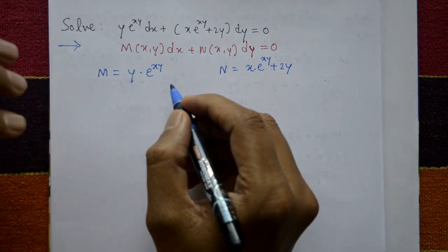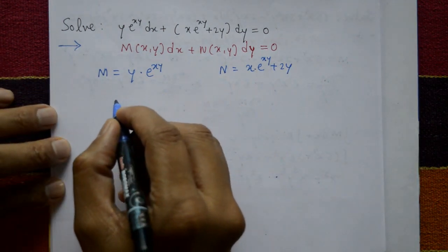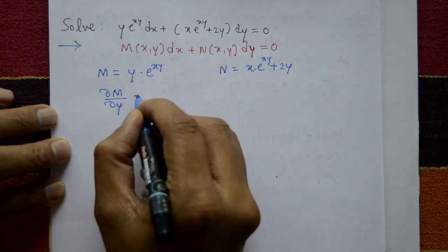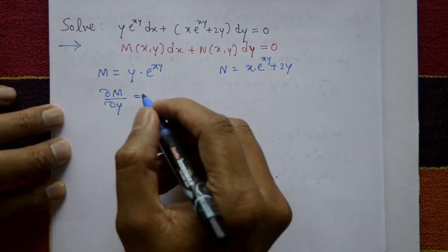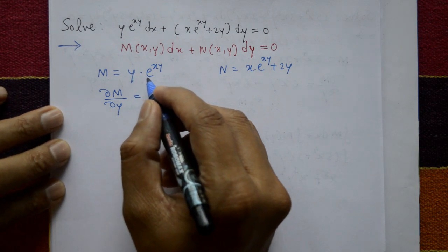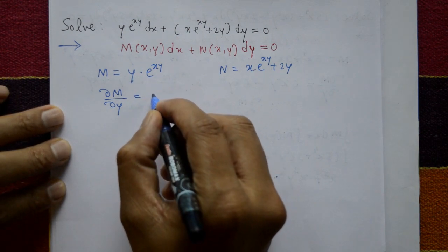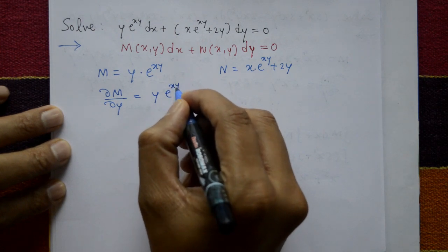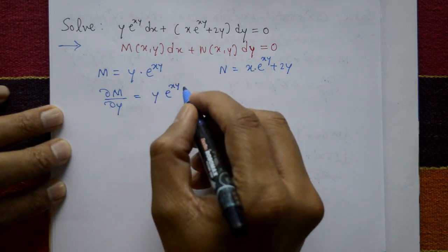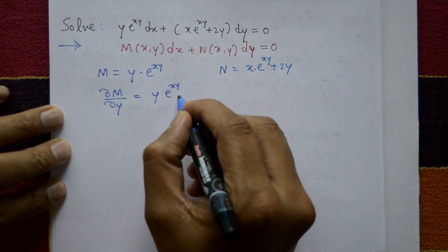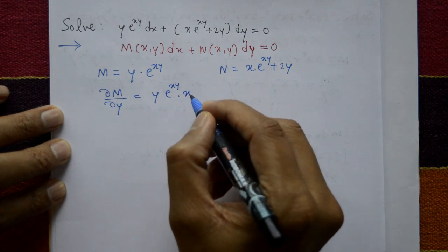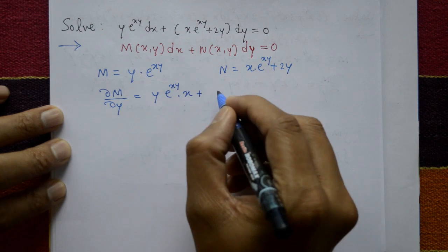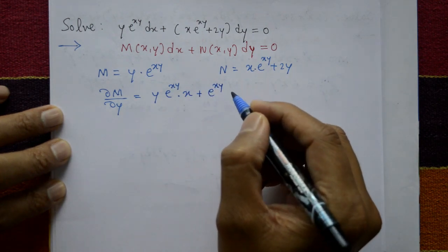First, check whether the equation is exact or not. Differentiate M with respect to y partially. Using the product rule: y as it is, differentiate e^(xy) — which gives e^(xy) times x (differentiating xy with respect to y) — plus e^(xy) as it is (differentiating y gives 1). So ∂M/∂y = xye^(xy) + e^(xy).